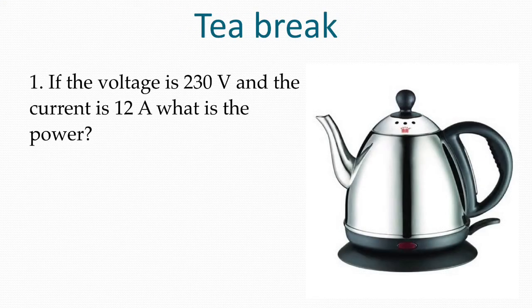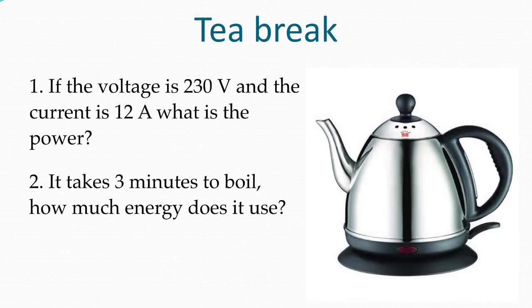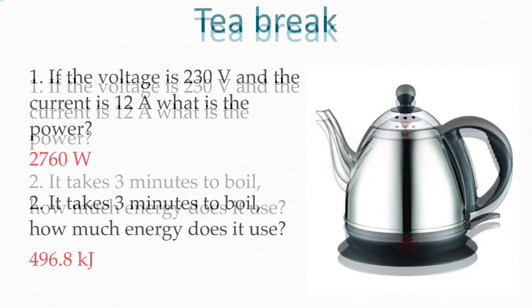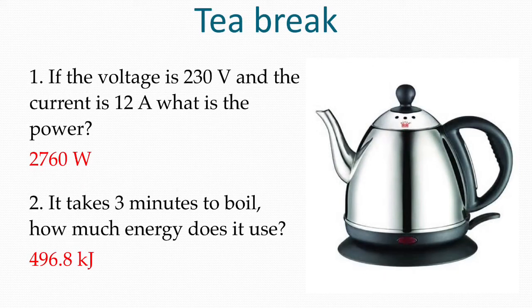A couple more questions now. A 230 volt kettle with a current of 12 amps flowing through it, what is the power? Pause the video and put the answer in your book. And for the second question, it takes three minutes to boil. How much energy does it use? Don't forget to change it into seconds first. So the power would be 2760 watts, and the energy used would be 496,800 joules.